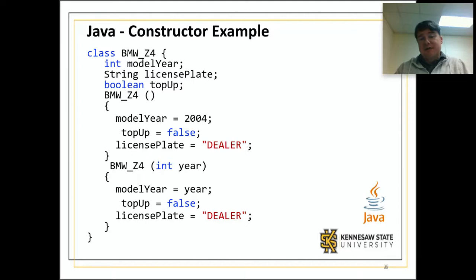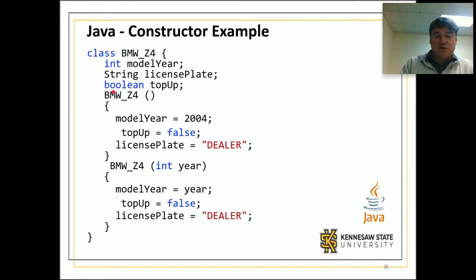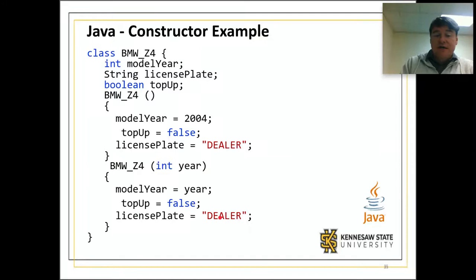Overloading means you have more than one method that takes different parameters. It's the same method name but with different parameters coming in. In the example of our dog, we might have a constructor called dog that takes no parameters and a constructor called dog that takes two parameters — that is an overloaded constructor. Here's an example: class BMWZ4 has model year, license plate, and a boolean top-up. This class has two constructors. How do I know they're constructors? Because the name of the method matches the name of the class and there is no return type. One constructor takes no parameters, one takes an integer parameter. They are both constructors — and correctly, this is an overloaded constructor.